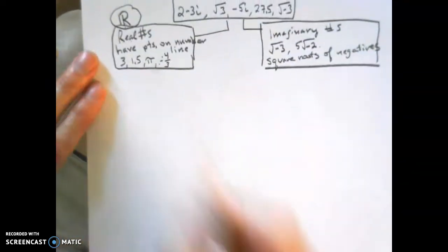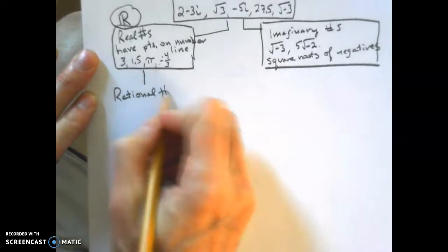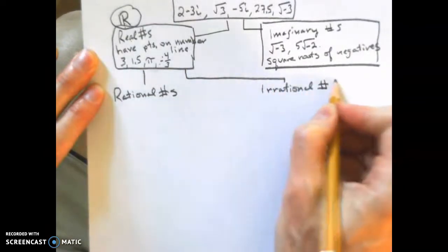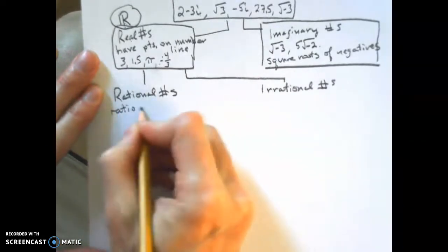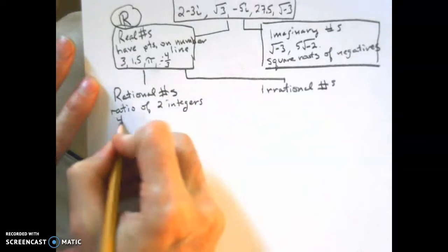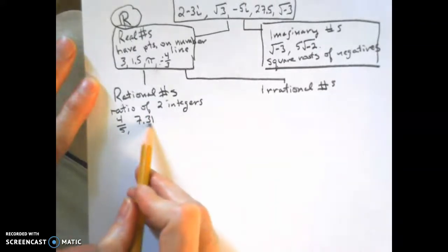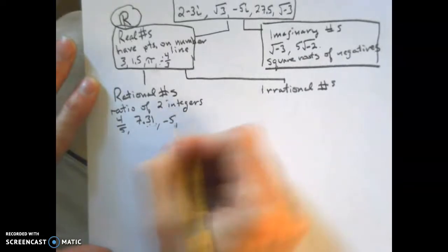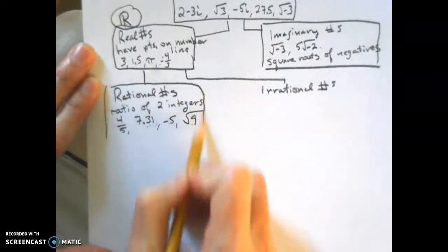Under real numbers, we break things down into rational numbers. Rational numbers are numbers that can be written as the ratio of two integers. For example, 4, 7.31 — even though that's a decimal, you could put it over 1, or multiply by 100 to get 731 over 100, which is a ratio of integers. Negative 5, and square root of 9, which simplifies to 3 — even though it looks like a radical, it's still rational because it simplifies to something that can be written as a ratio of integers.